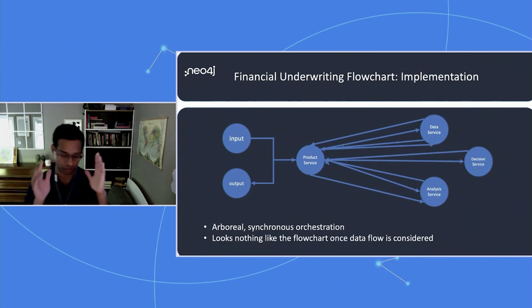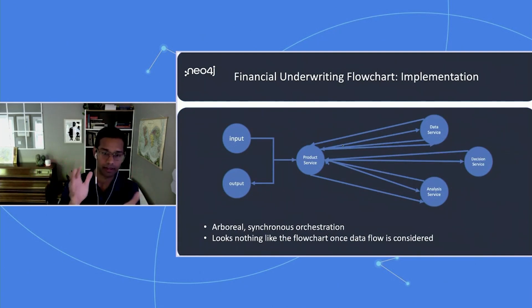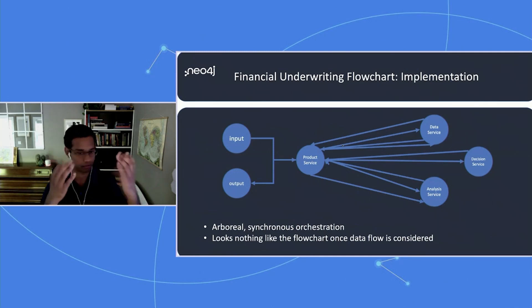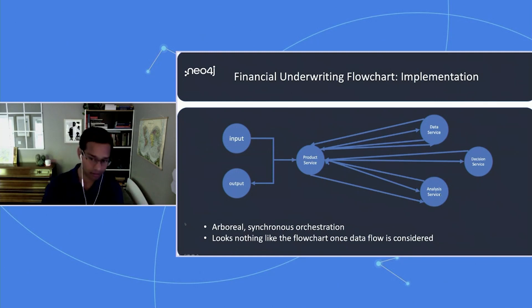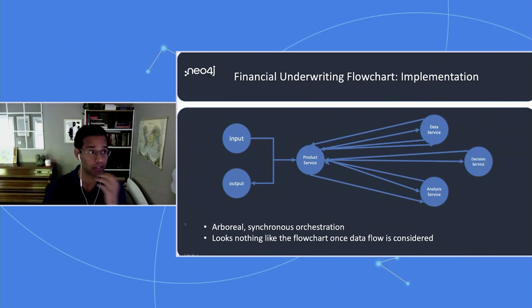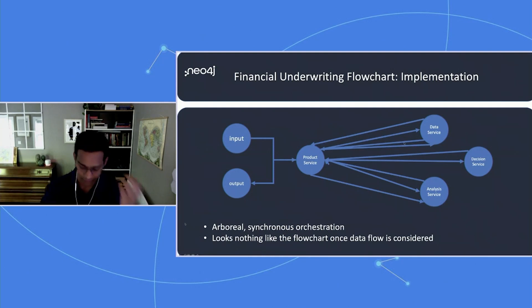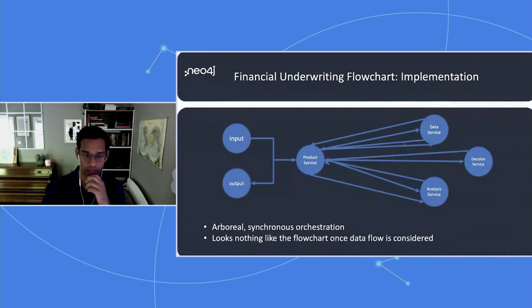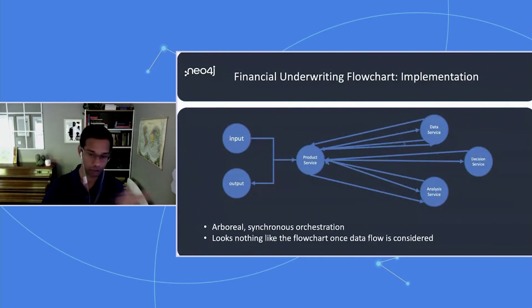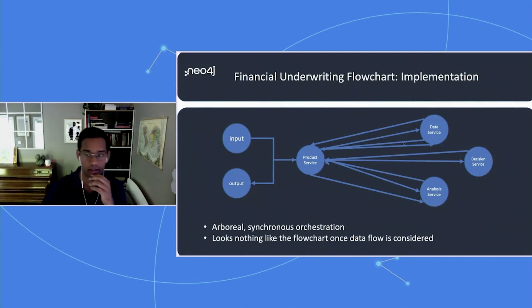In the actual implementation, you take some input and there's a product microservice calling a data microservice that buys the data, which calls an analysis microservice that runs models, which calls a decision microservice for the ultimate decision. There's a lot of back and forth, because those data edges show up in reality. The flowchart and the actual implementation don't look much like each other because the flowchart hides the data layer.